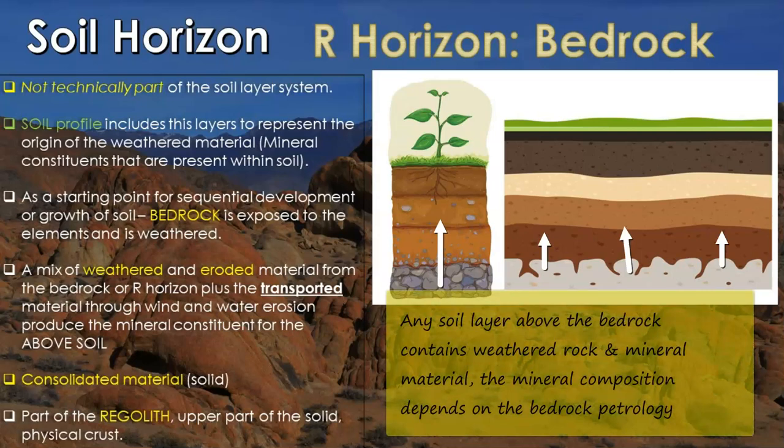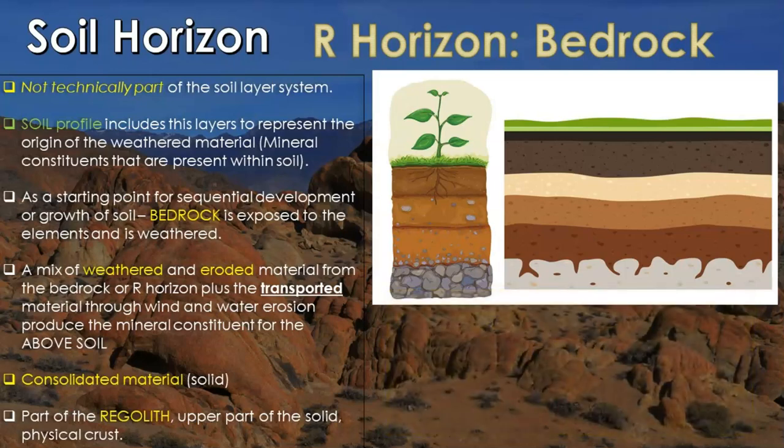The soil is going to derive and form from this layer being weathered. The weathering over tens, hundreds, thousands, or millions of years — depending on location, altitude, and many other factors — the mechanical and chemical weathering of this bedrock creates small pieces of rock which mix together with organic material to form the first A and C horizons, initiating soil development over the course of time.